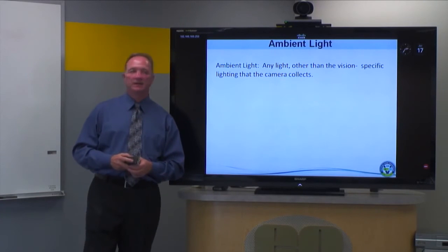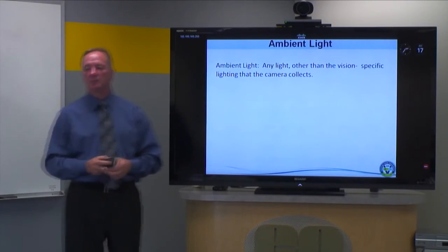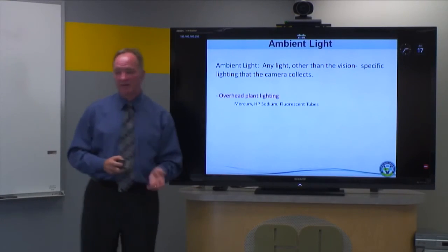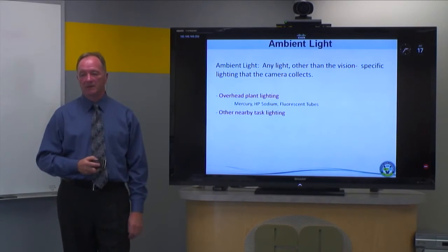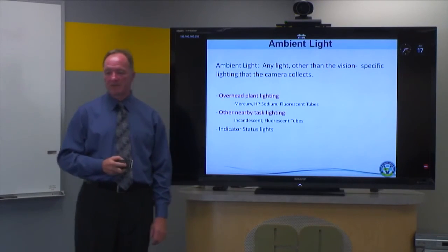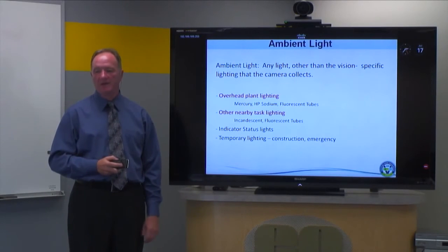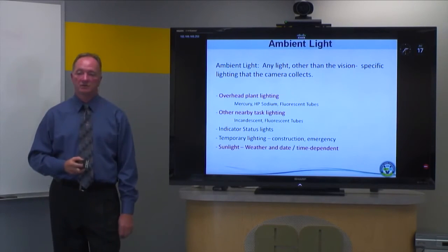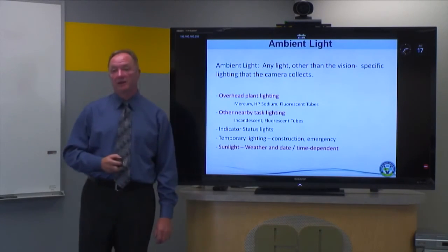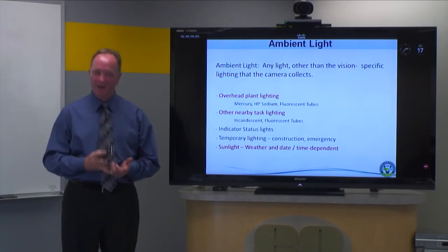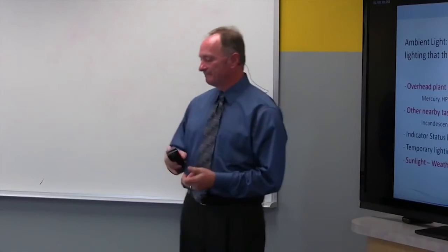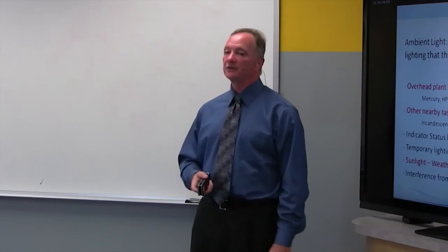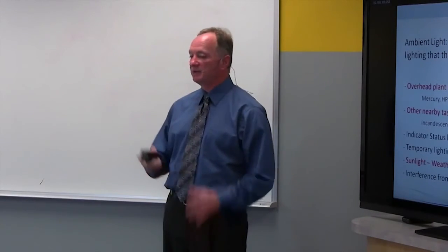Ambient light is defined as any light other than your vision-specific lighting that the camera might collect — overhead plant lighting, task lighting, indicator lights, any stray light, or temporary lighting. I've even had situations where sunlight was an issue, which can happen only certain times of year or day and is very difficult to deal with. We've also all had interference from nearby vision system lighting at other stations.